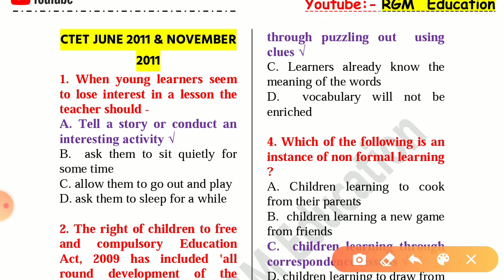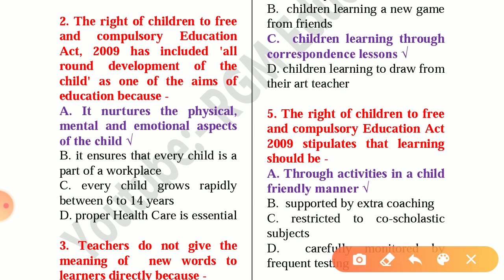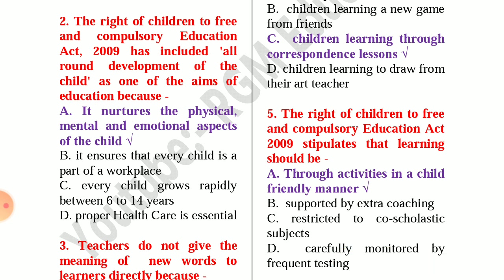Question number 1: When young learners seem to lose interest in a lesson, the teacher should tell a story or conduct an interesting activity. Question 2: The Right of Children to Free and Compulsory Education Act 2009 has included all-round development of the child as one of the aims of education because it nurtures the physical, mental and emotional aspects of the child.